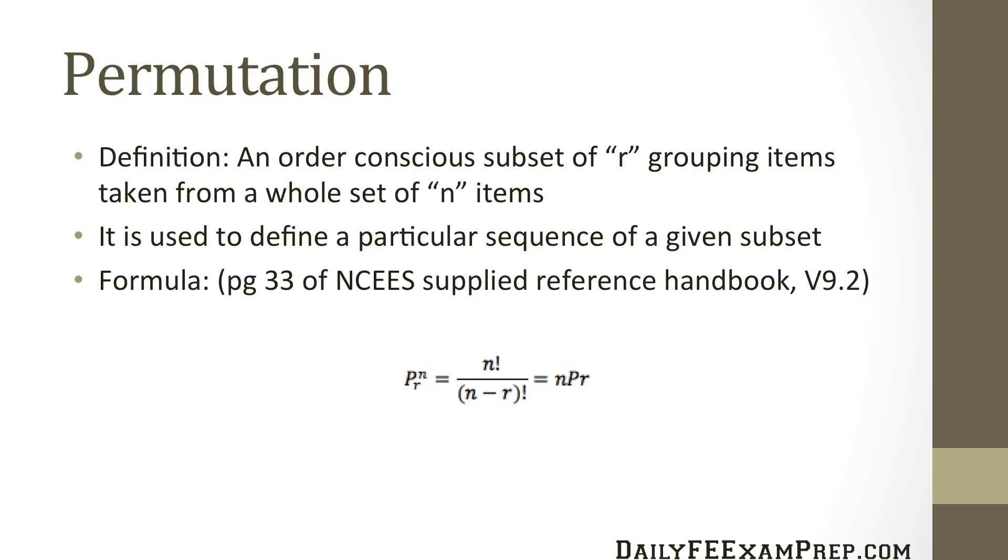It's also represented in two or three different ways, where it could be P with a superscript of N and a subscript of R, or also NPR. And there's also one other way that's shown in the Supplied Reference Handbook. The exclamation point is R factorial, N is the number of elements to choose from, and R is our subset group size.